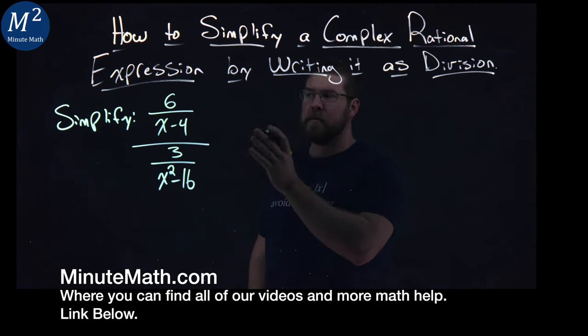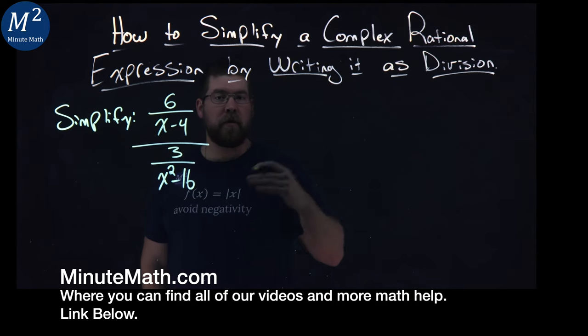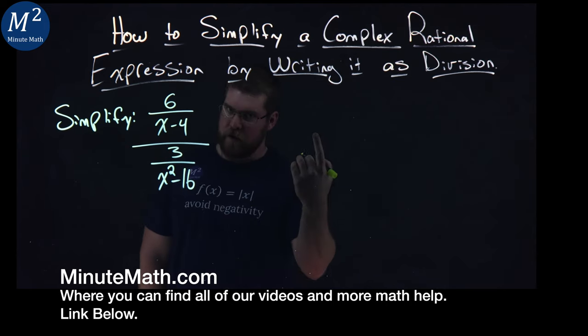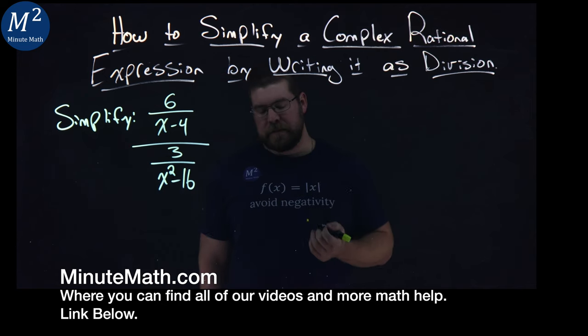We're given this problem here: simplify 6 over x minus 4, all over another rational expression, 3 over x squared minus 16.